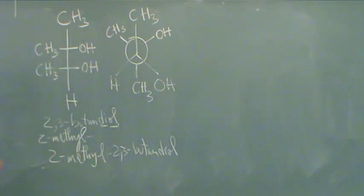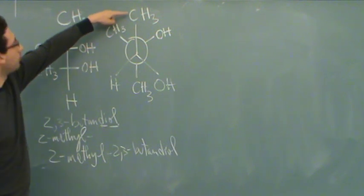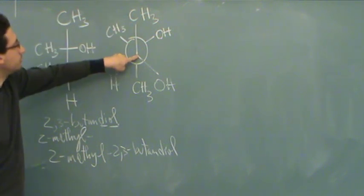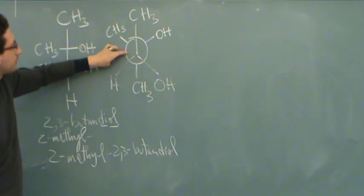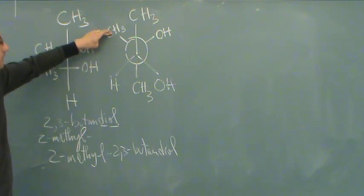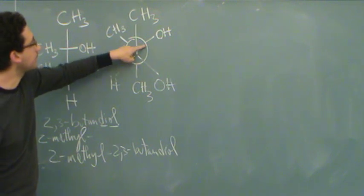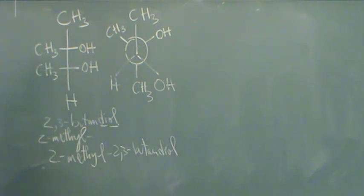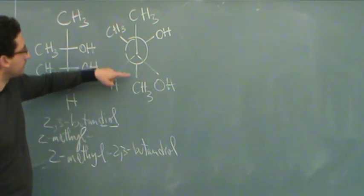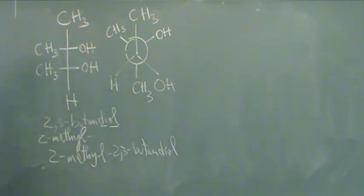Okay. Now let's compare the other one. We've got one, two, and the circle represents a third carbon, and then a fourth. And so this is a butandiol also. The OH is on the second and third position. And then to get the lowest numbering, there is a methyl substituent on the second carbon. So it has the same name.